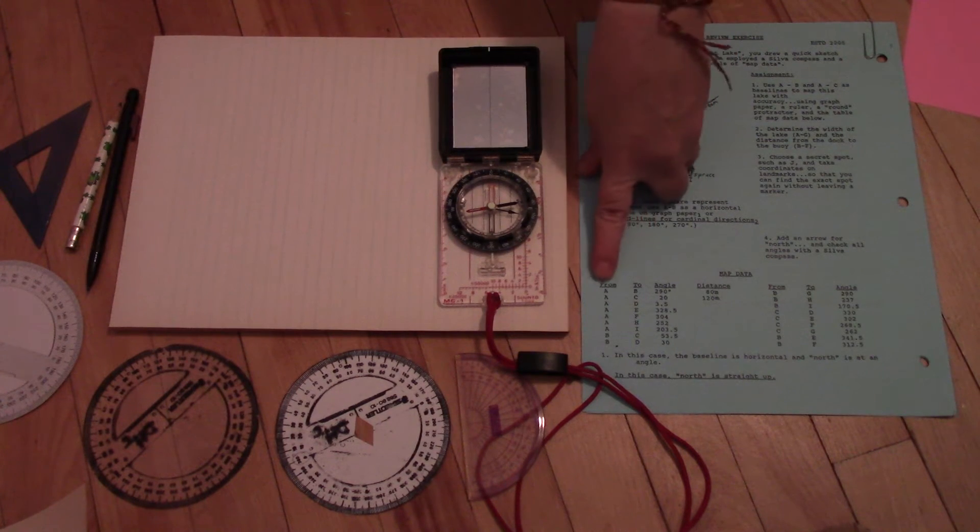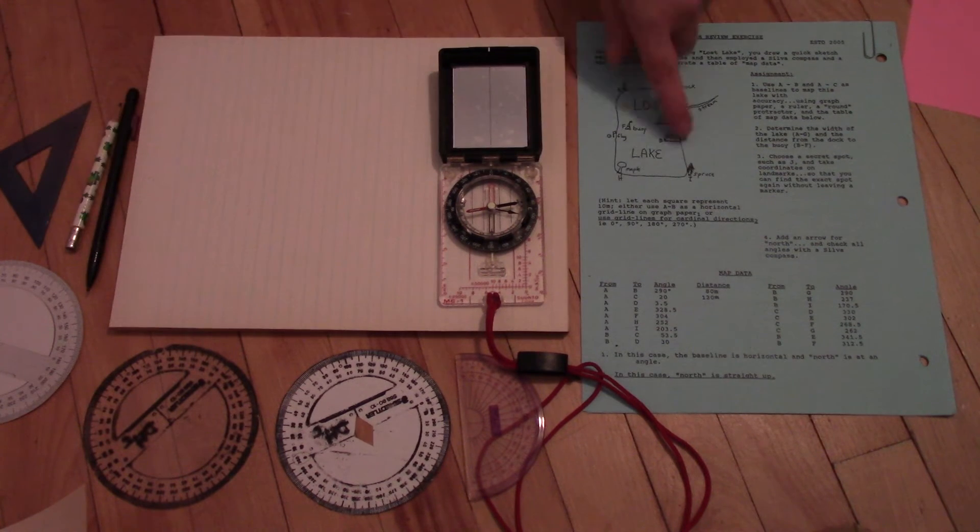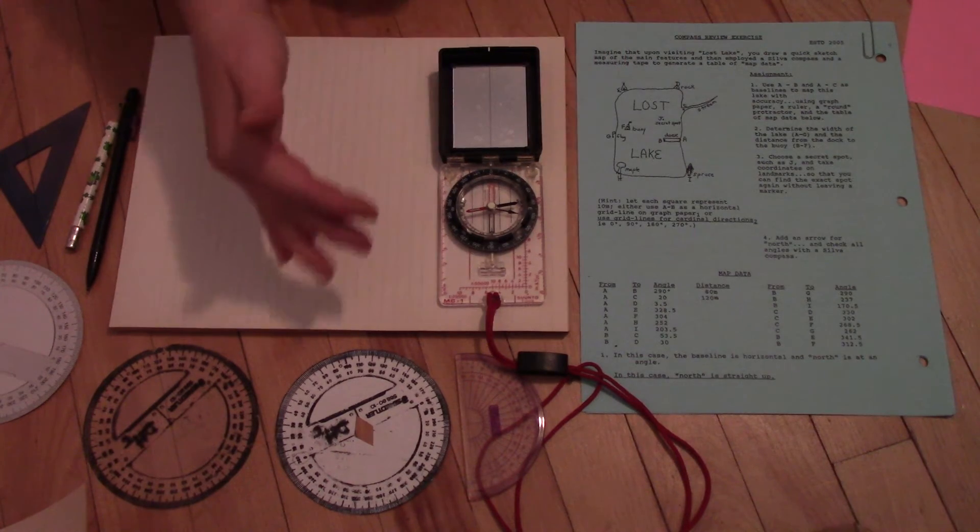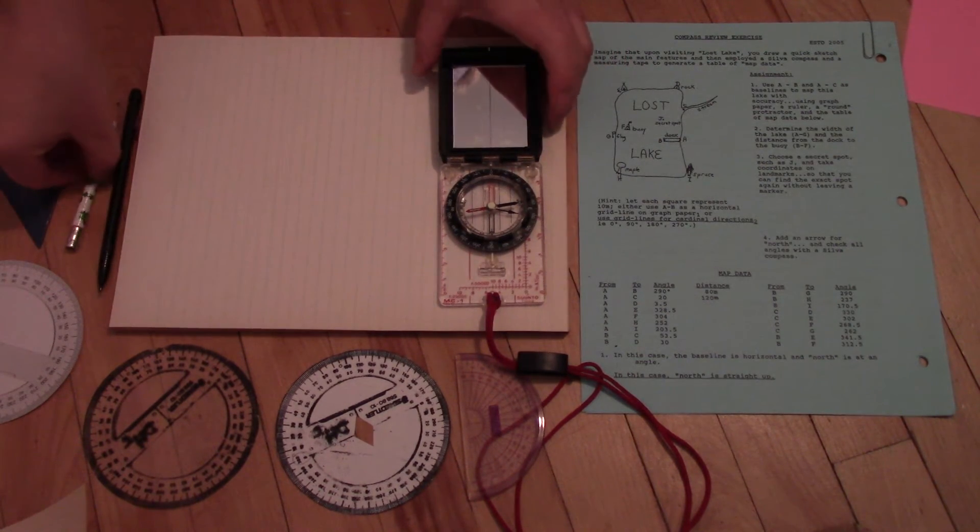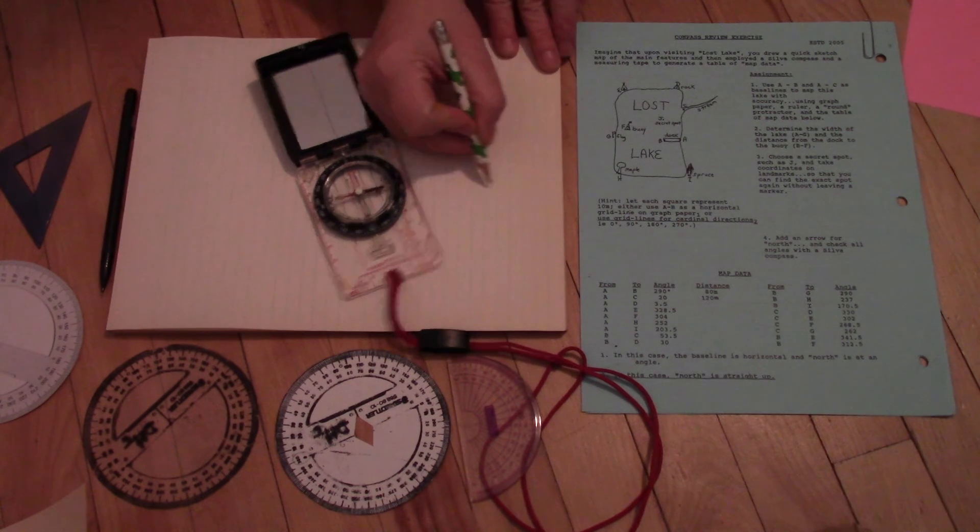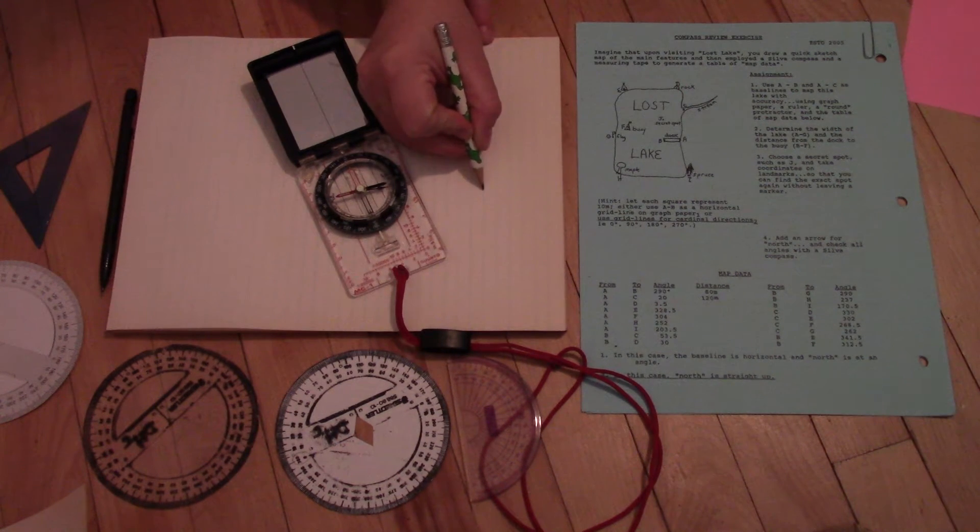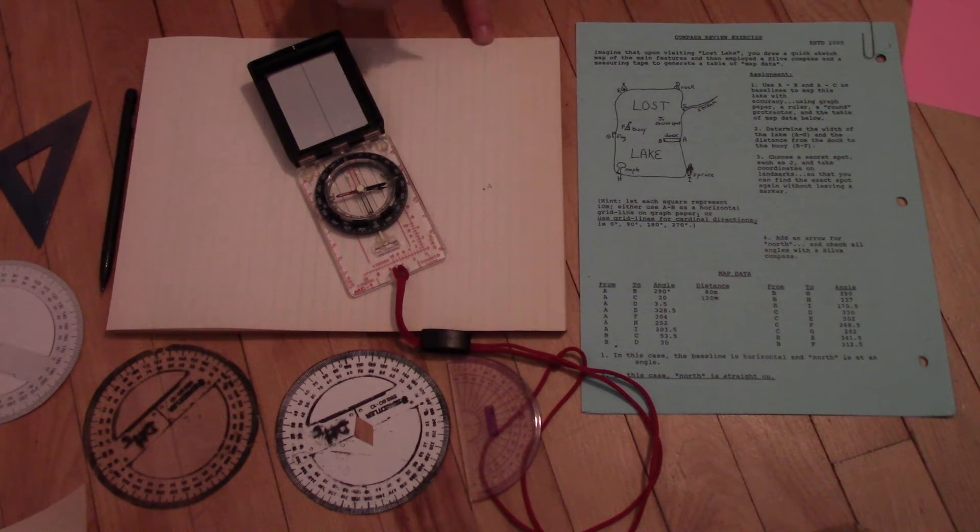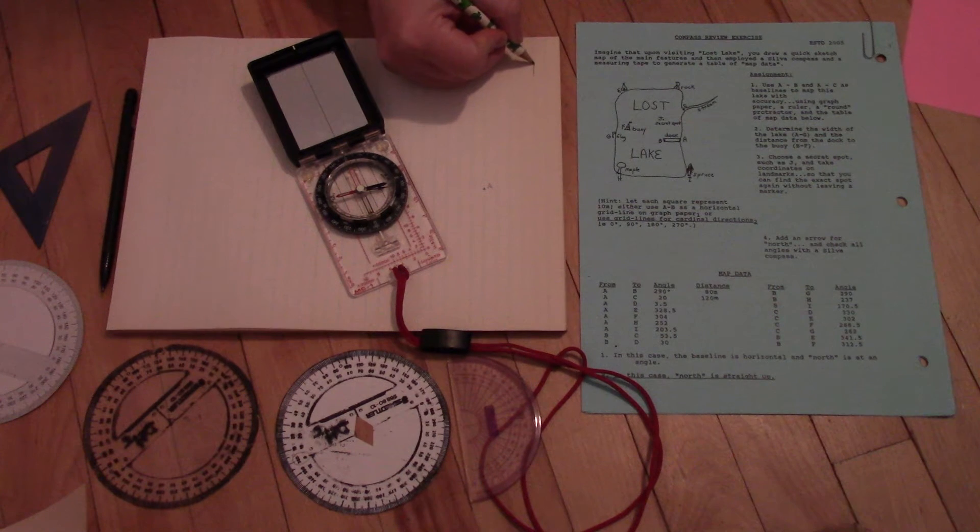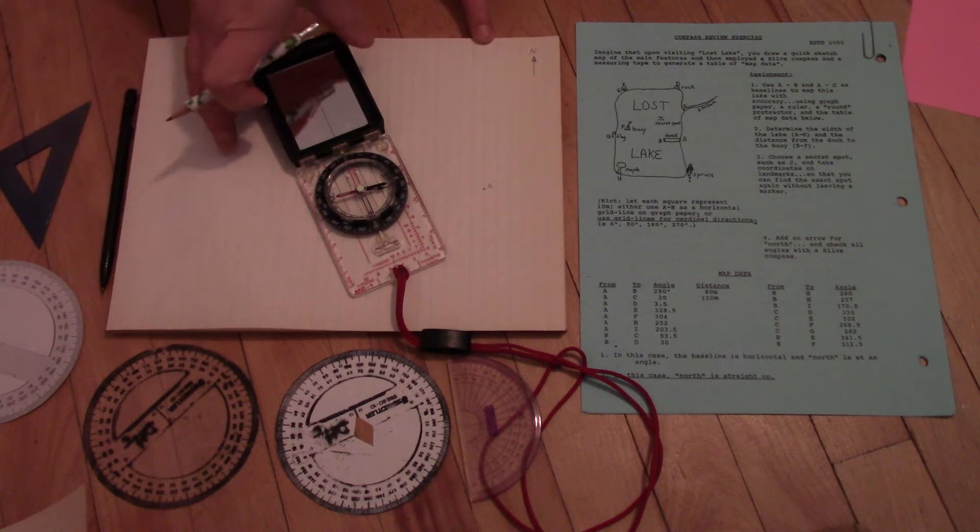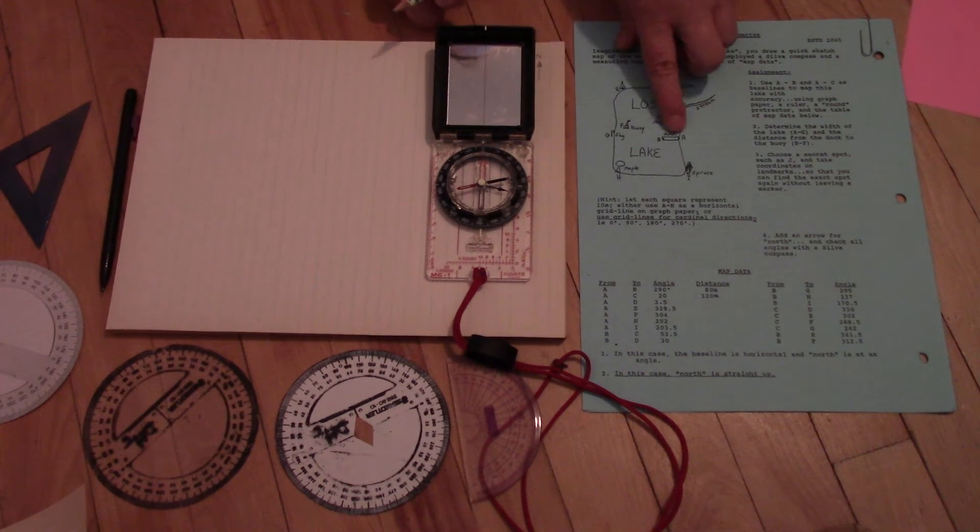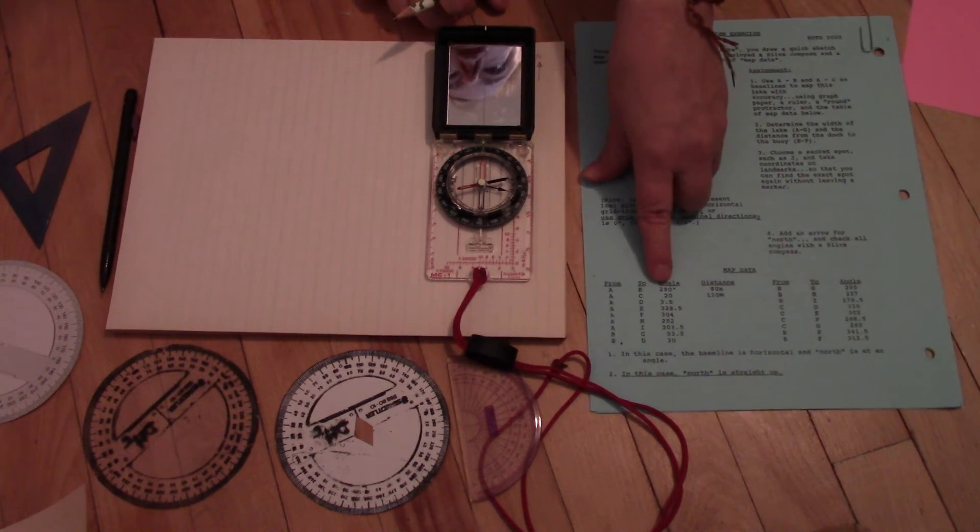And how we're going to do that is we're going to start here at point A. Now on the sketch, the map is taller than it is wide. So realistically, I'd want my sheet of paper the other way. But I'm going to start here and just put A a little bit in, in kind of the middle. I'm doing this upside down, so bear with me if things look weird. I want these lines to be facing north. It says here to go from A to B, so to go down the dock, we need to go 290 degrees.